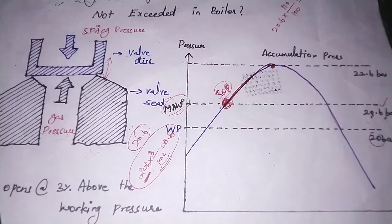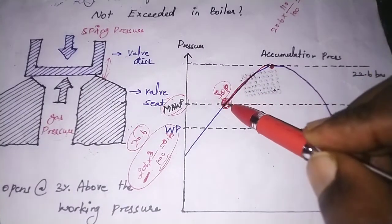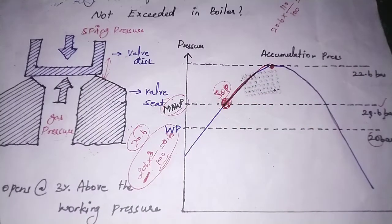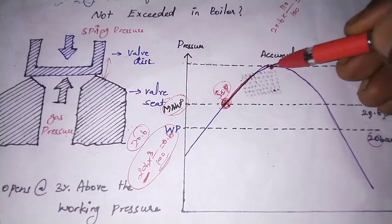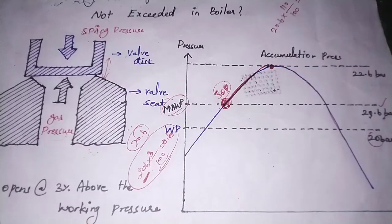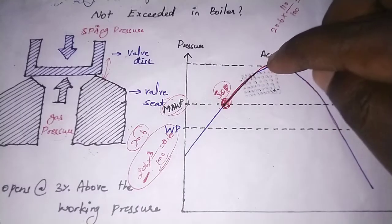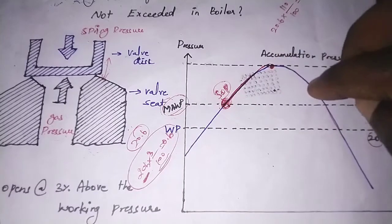Even with the safety valve open, spring compression continues, so pressure inside the boiler keeps rising. At 22.6 bar, the spring compression stops. Only after the spring compression stops does the pressure drop occur inside the boiler.